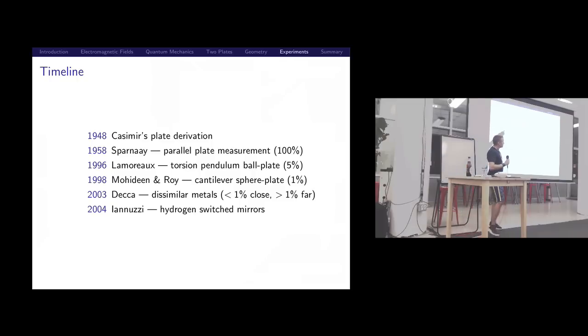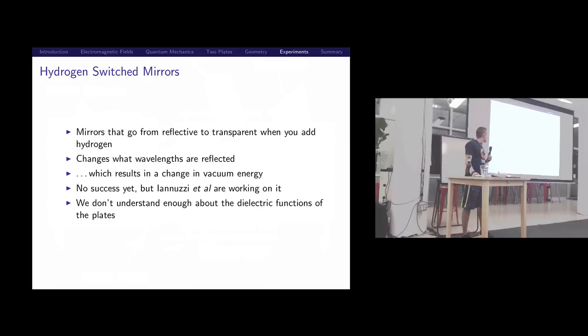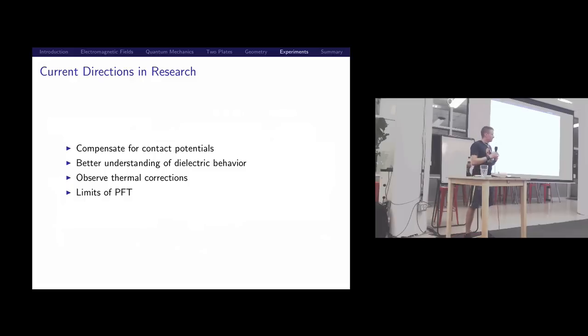In 1948, that's when the paper was actually published, it said an experimental confirmation might not be infeasible. It took until 96 or 97 to actually get a measurement to within about 5% of the error. In 1998, we get to 1%, and in 2004, we start doing more interesting experiments, looking at dielectric behaviors. You can get mirrors that turn on and off based on the presence of hydrogen, which means you can control the Casimir force dynamically.